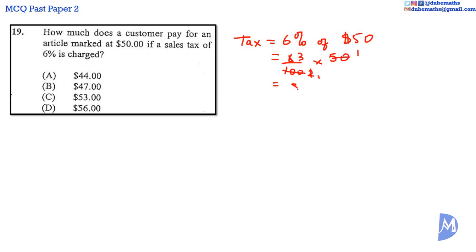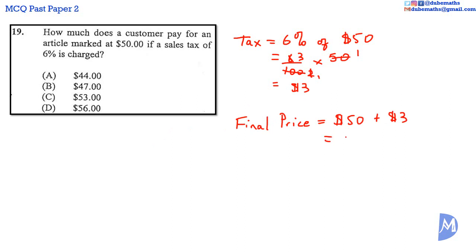It's equal to $3. The final price the customer pays is equal to the $50 plus the $3 tax. It's equal to $53. The answer is C.